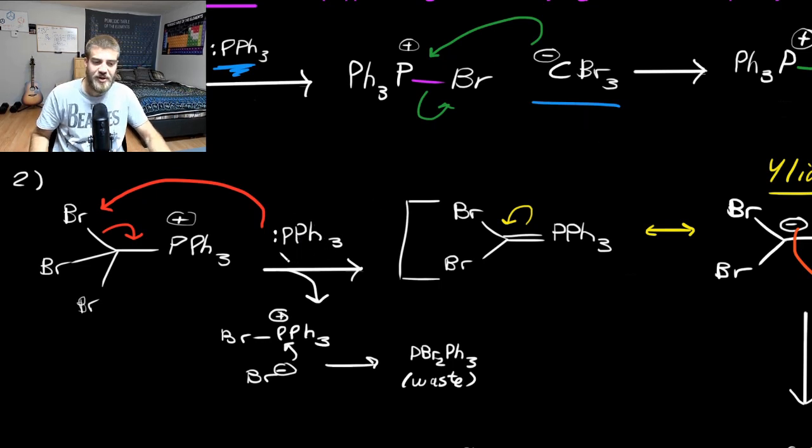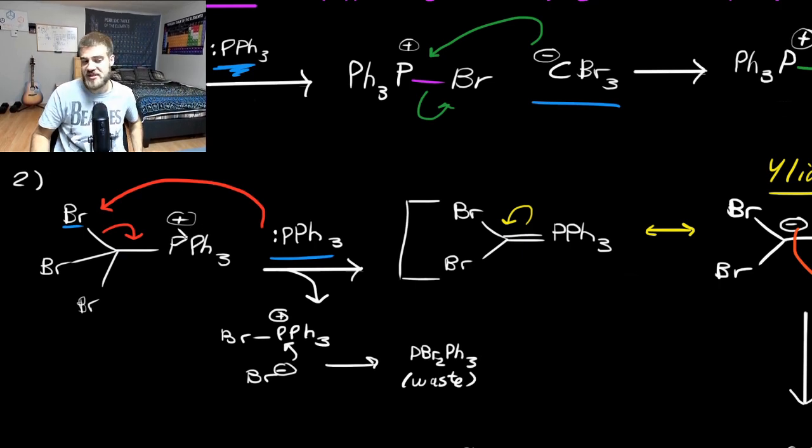The second part of the mechanism is when the second equivalent of triphenylphosphine reacts and attacks, once again, a bromine atom. The two electrons from this sigma bond transfer and create a pi bond between the phosphorus and the carbon, hence stabilizing the positive charge on the phosphorus. This second equivalent now has four bonds and is positively charged, and we made a bromide ion, which can then attack this phosphorus, and then you get this as a side product, and you get to waste it eventually.